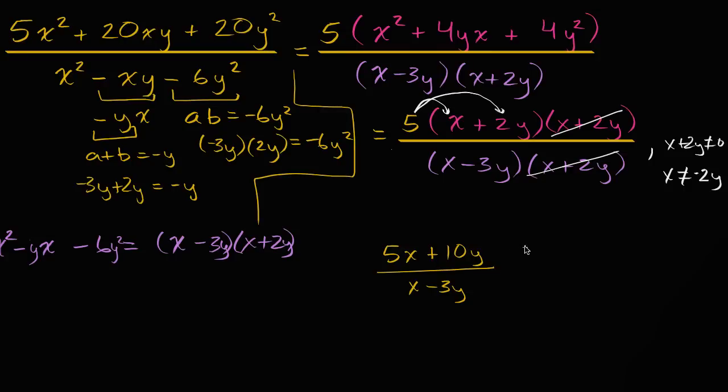But once again, if we want it to be algebraically equivalent, we would have to say x cannot be equal to, x cannot be equal to negative two y. And now this is algebraically equivalent to what we had up here, and you can argue that it's a little bit simpler.